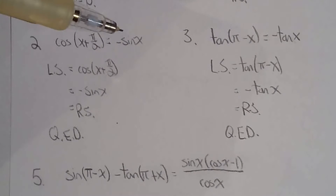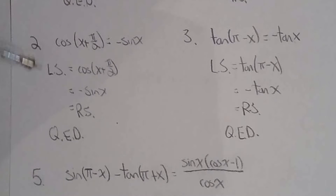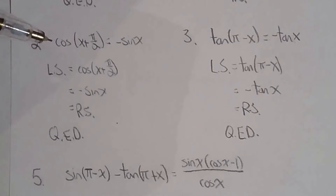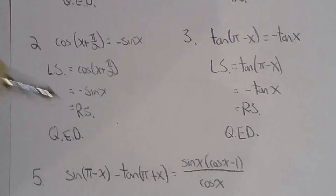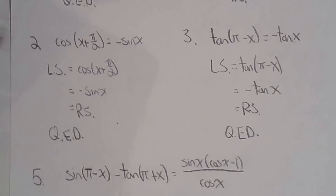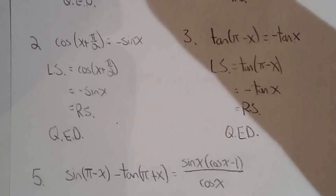For question two — cosine of x plus pi over two equals negative sine x — I used equivalent trig expressions, but you could also use the addition formula for cosine and get the same answer. That's a theme for all 15 questions: there are infinite ways to prove a trig identity. As long as your proof is correct, I'll accept it.